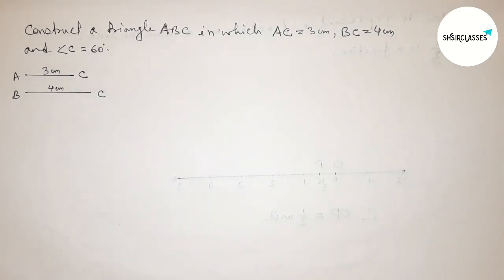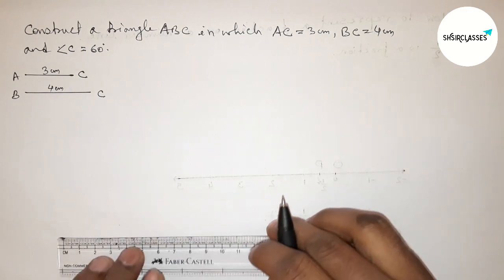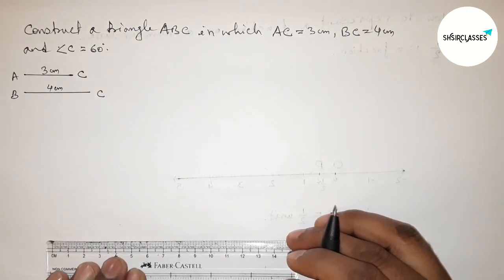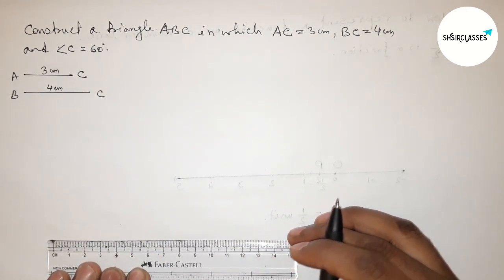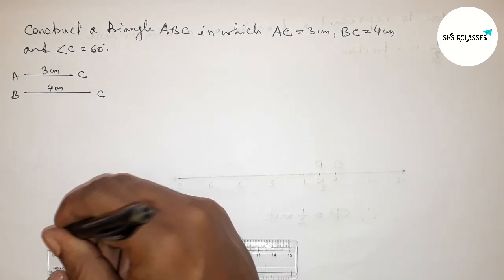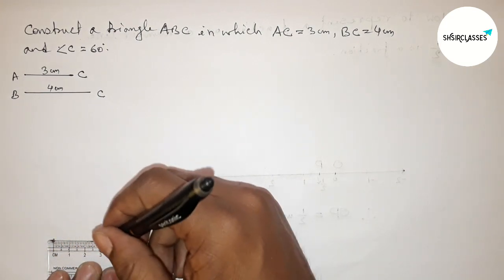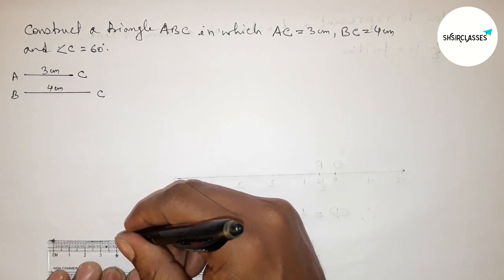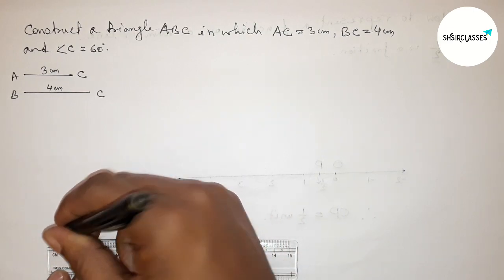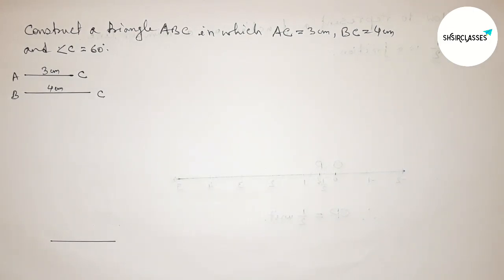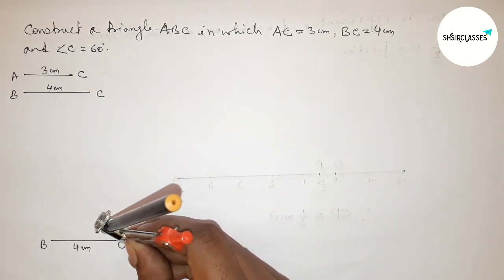Again, we have to draw the line BC equals to 4 centimeters. Starting 0, 1, 2, 3, 4, so this is 4 centimeters. Now taking here B and here C. Now drawing a 60-degree angle on point C, so putting the compass on point C and taking any length.